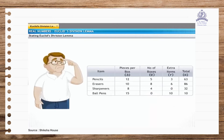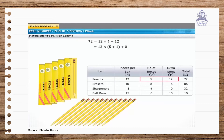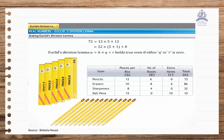Now suppose Mr. Chathura discovers he has 12 extra pencils instead of 3. What happens to Euclid's division lemma in this case? 12 pencils add up to one complete box. So we see that if R becomes equal to B, the value of Q increases by 1 and the value of R is reduced to 0. Thus, the value of R in the equation can be greater than or equal to 0 and less than the value of B.